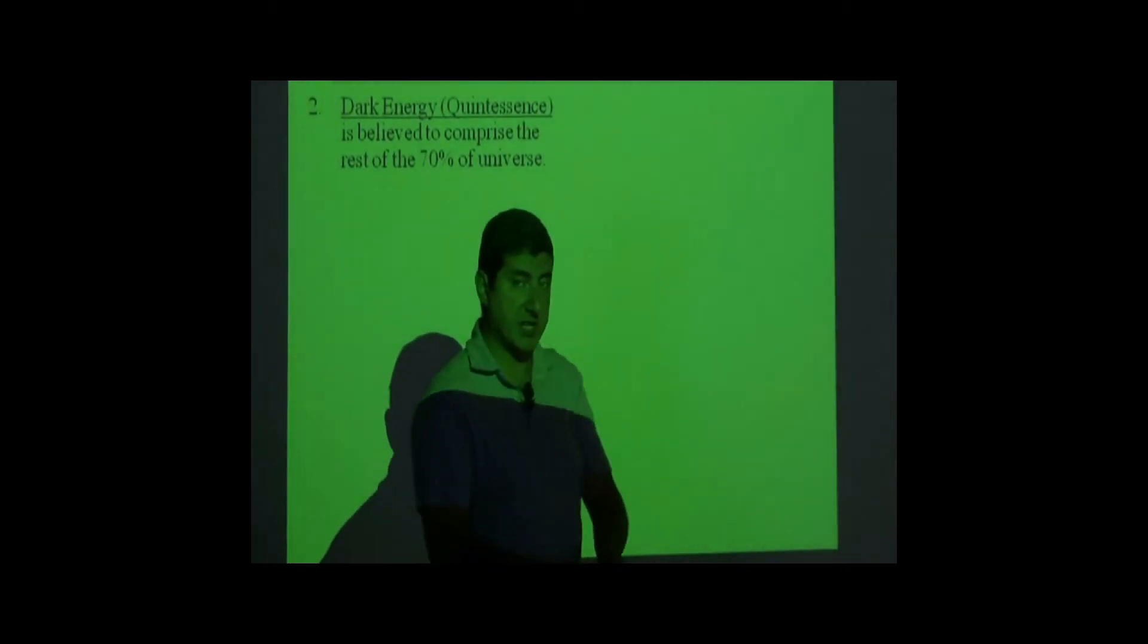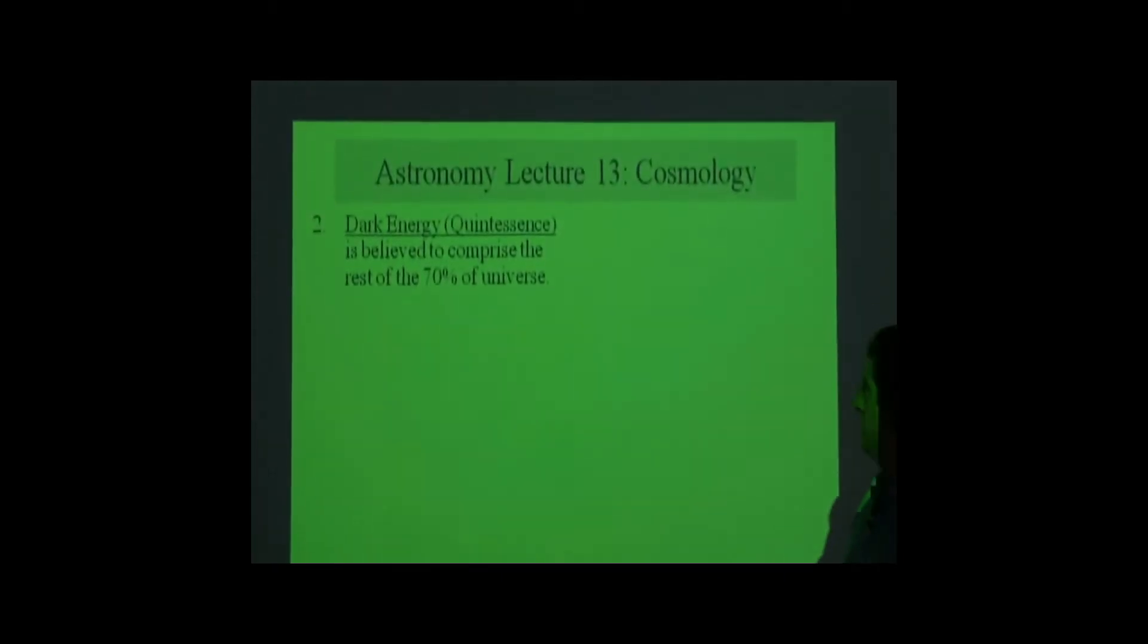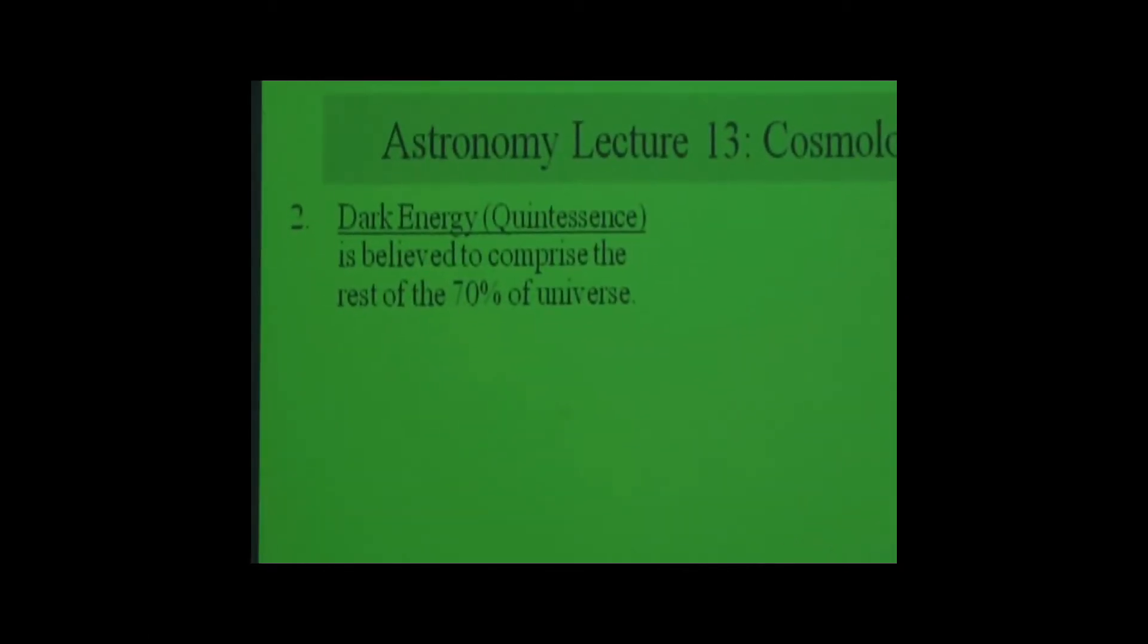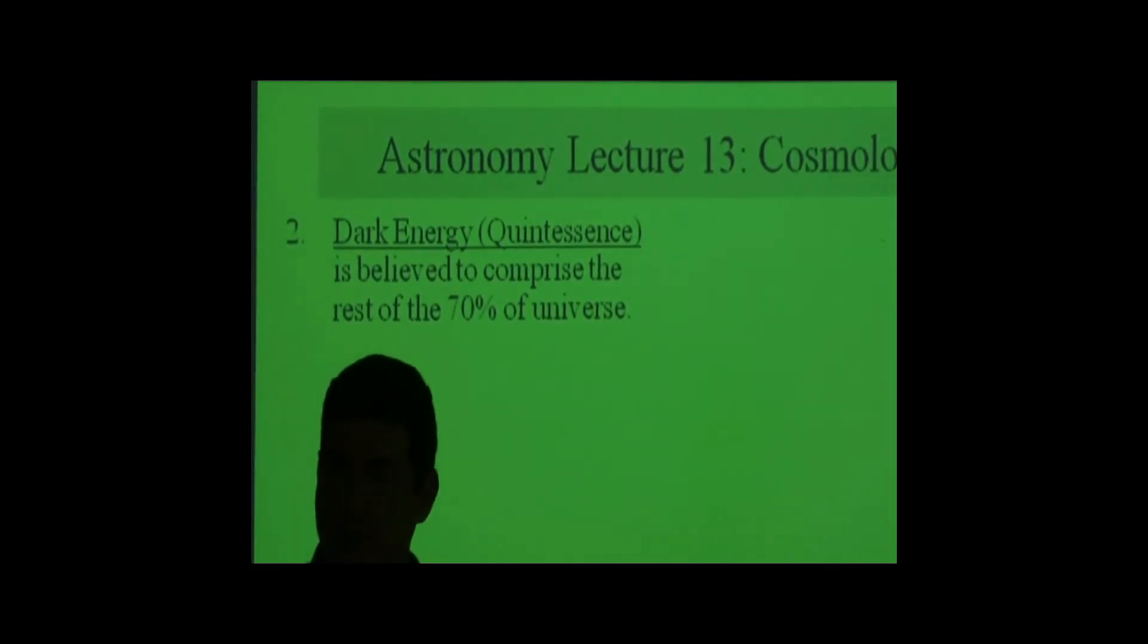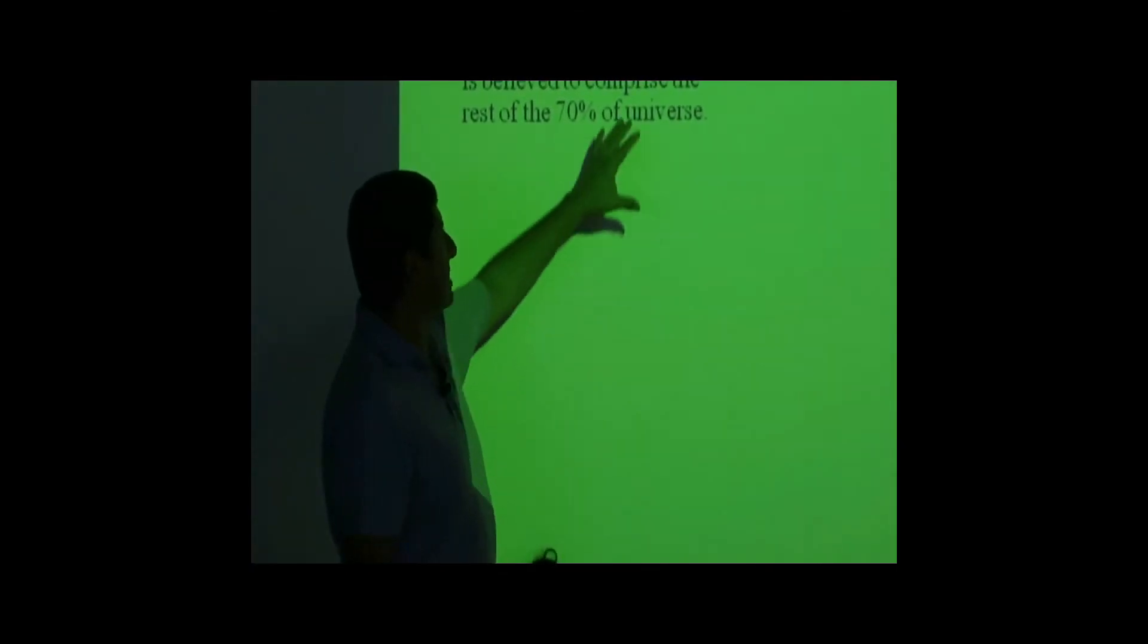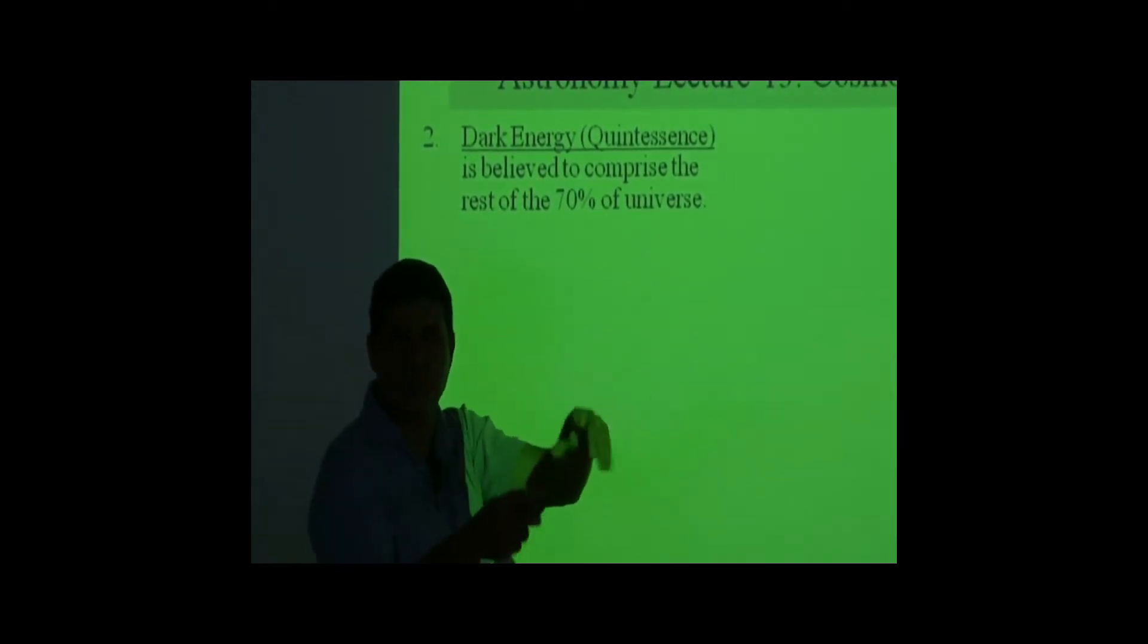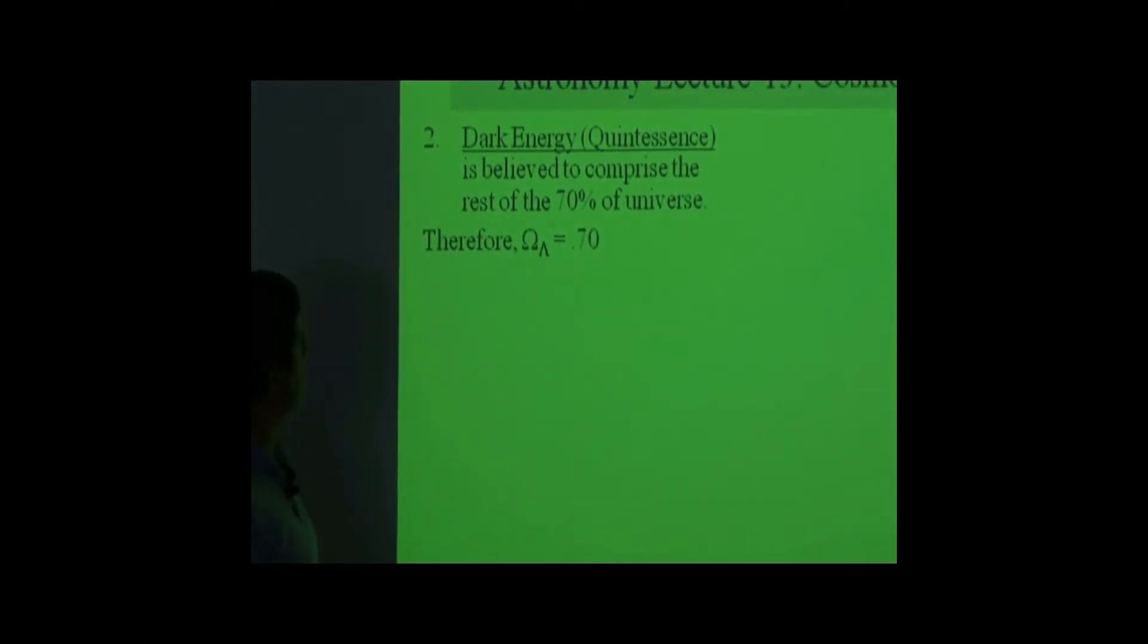25% plus 5%, roughly 30%, what's left? Then there's something known as dark energy. Quintessence. The reason we call this quintessence is because the Greeks believed in four forms of matter: Earth, wind, fire, and water. And they also believed in the fifth form of matter, which they called quintessence. Quint means fifth. So we kind of get the idea behind this from them. This other form of matter that you can't touch, it's just energy. It's believed to comprise 70% of the universe.